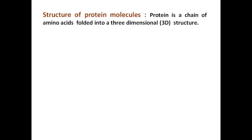So let's see what is a protein molecule. Protein is a chain of amino acids folded into a three-dimensional structure. So what is an amino acid? Amino acids are the building blocks of proteins and have a common structure. They consist of four key components.